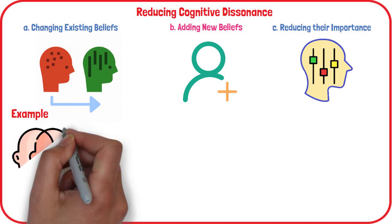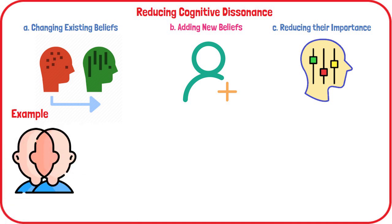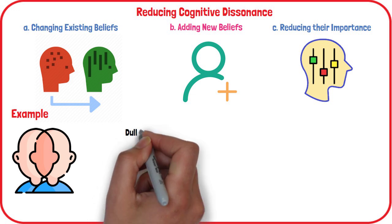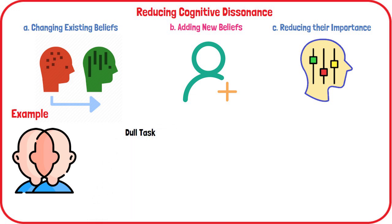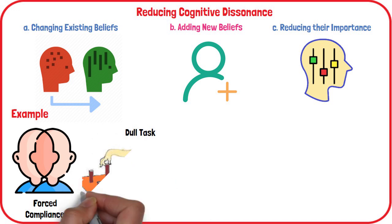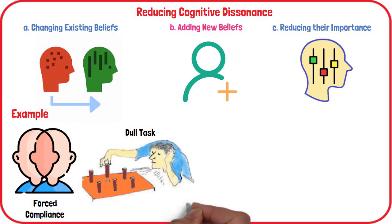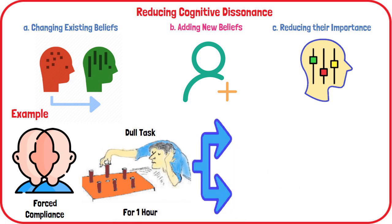Festinger and Carl Smith investigated whether making people perform a dull task would create cognitive dissonance through forced compliance behavior. They used 71 male students as participants to perform a series of dull tasks, such as turning pegs for an hour. They were then paid either $1 or $20 to tell a waiting participant — a confederate — that the tasks were really interesting. Almost all of the participants agreed to walk into the waiting room and persuade the confederate that the boring experiment would be fun.